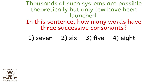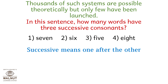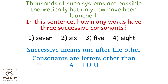Thousands of such systems are possible theoretically but only few have been launched. In this sentence, how many words have three successive consonants? Successive means one after the other. Consonants are letters other than A, E, I, O, U. NDS is one, SYS is another, LLY is another, NLY is one more, NCH is one more. If you count them, it's five — answer is option 3.